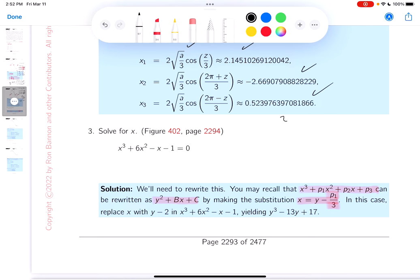x equals y minus, well, p₁. Well, p₁ in this particular example is going to be 6, and 6 divided by 3 is 2. Let me go through that substitution. So what are you going to get? You get (y - 2)³ + 6(y - 2)² - (y - 2) - 1 = 0.